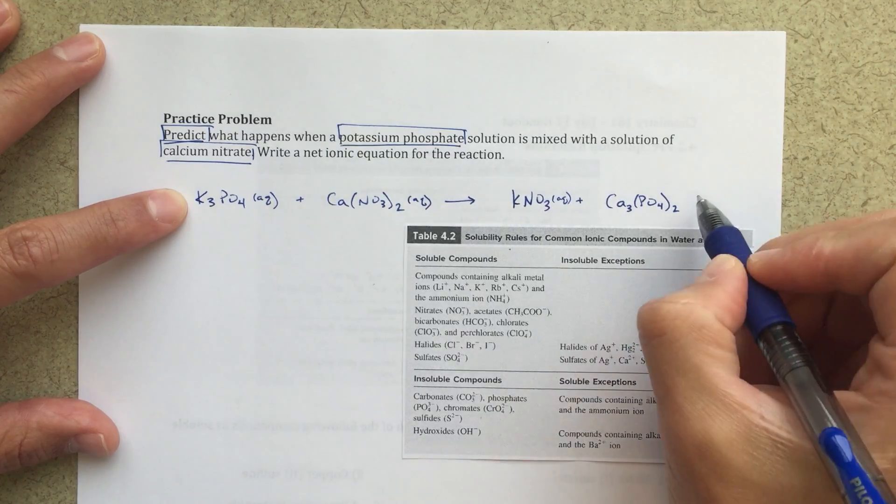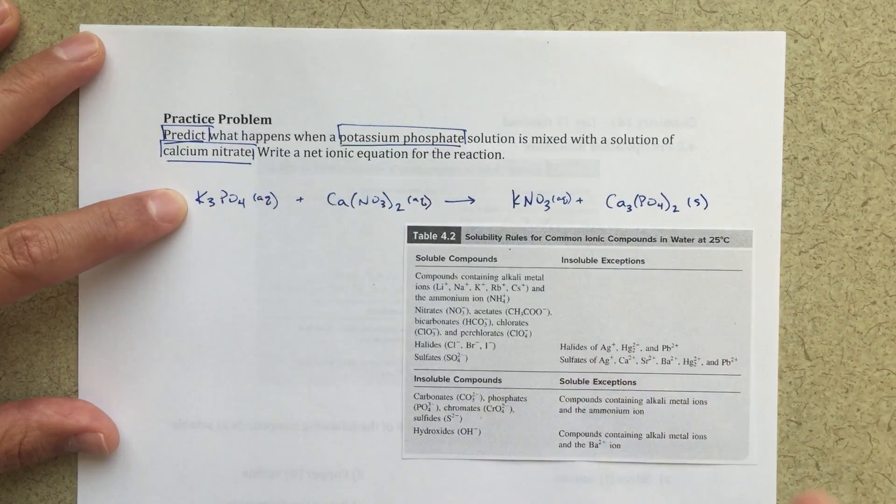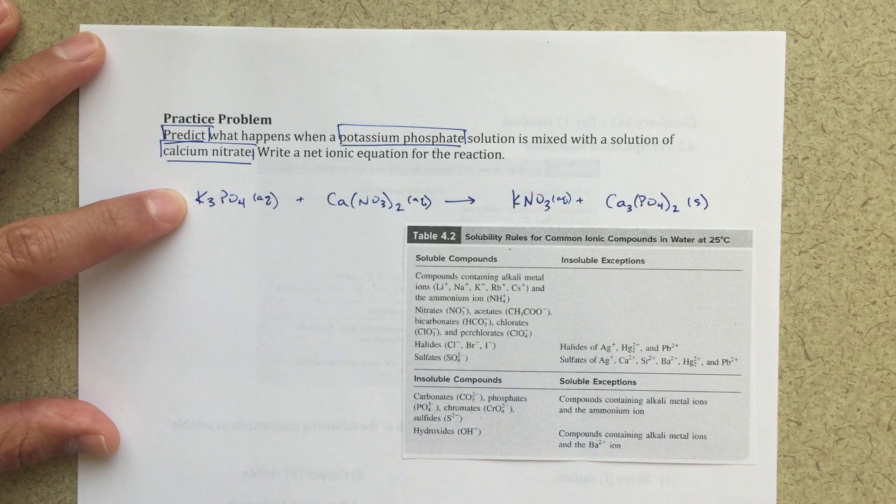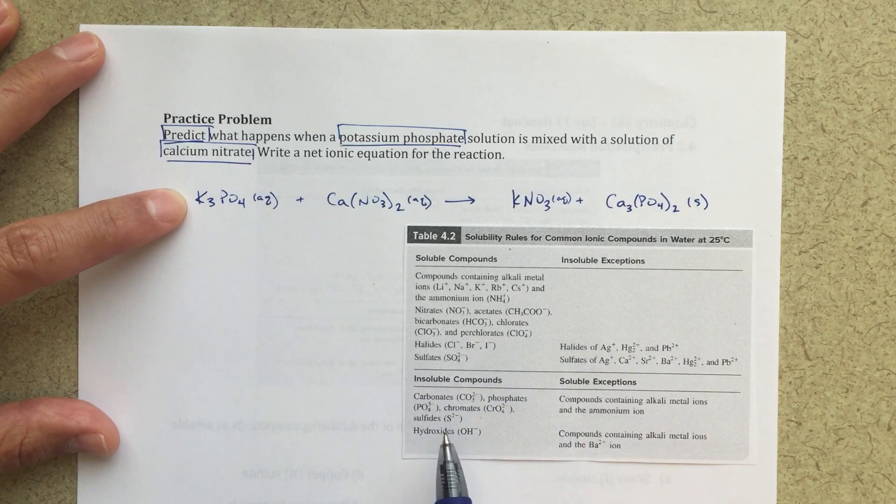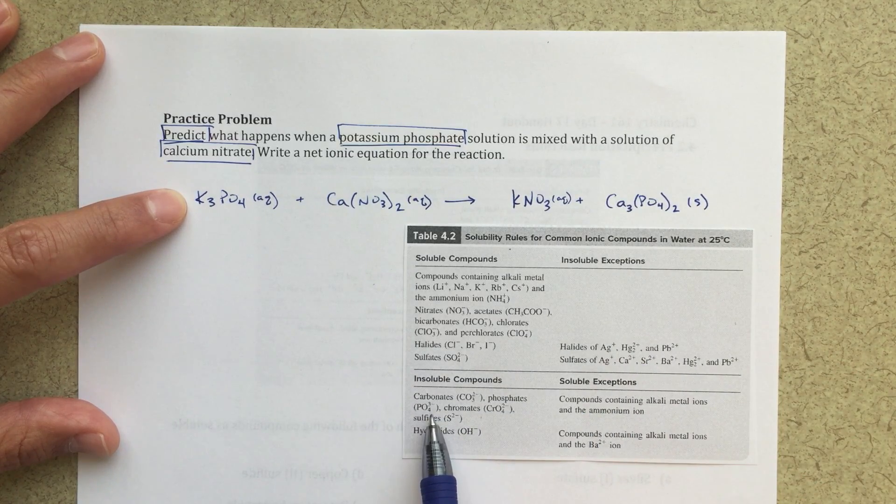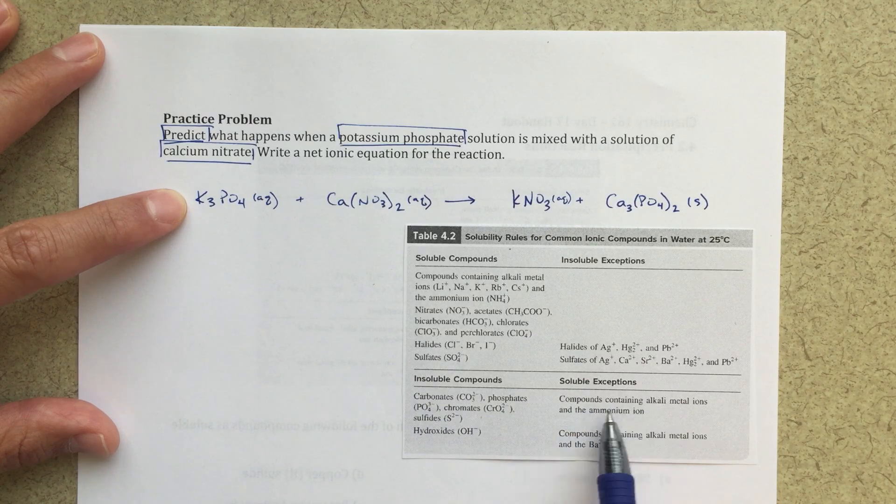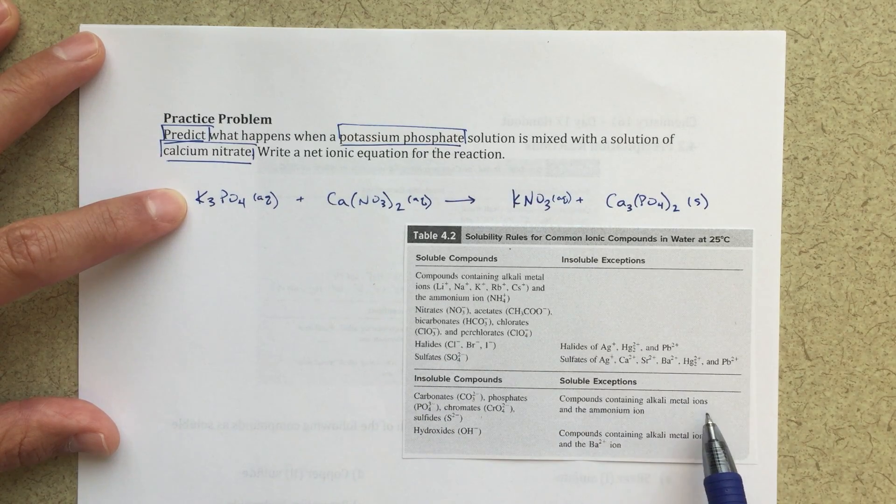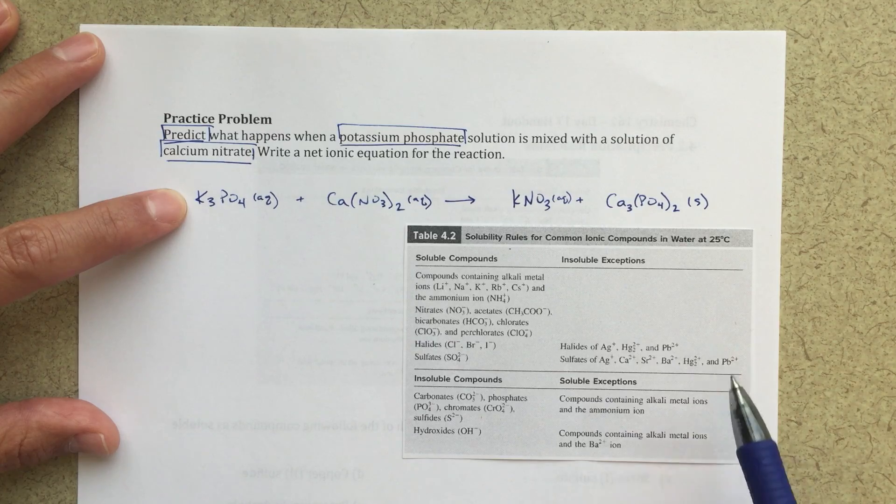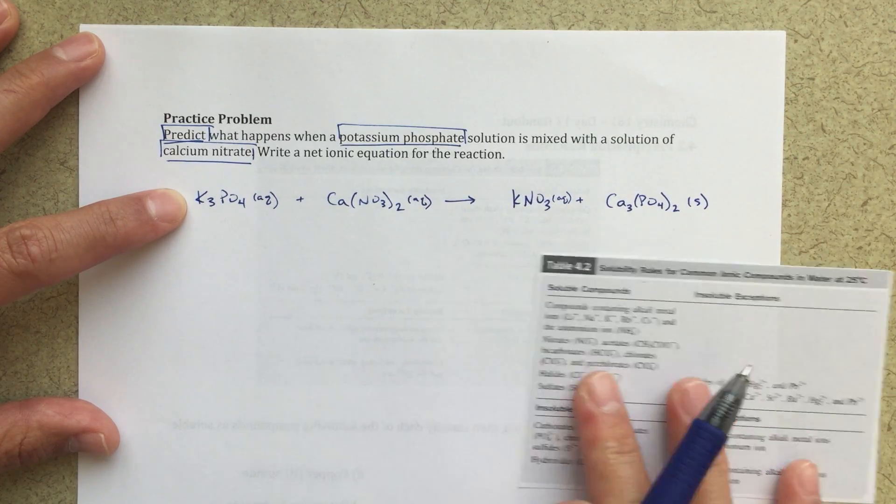The calcium phosphate, that's going to be a solid. That's going to be the precipitate that falls out of the solution. And I can look at my rules here. Phosphates are going to be insoluble, and the only exceptions are group one alkaline metal ions or the ammonium ion. So that's going to be my solid that falls out of the solution.